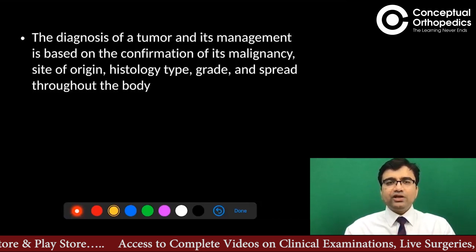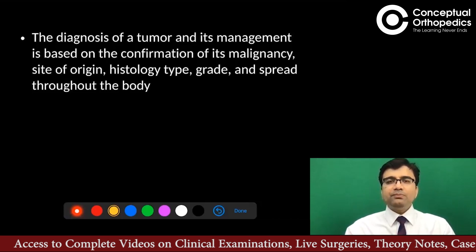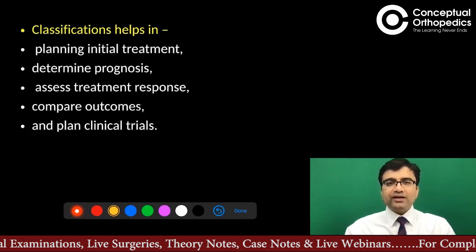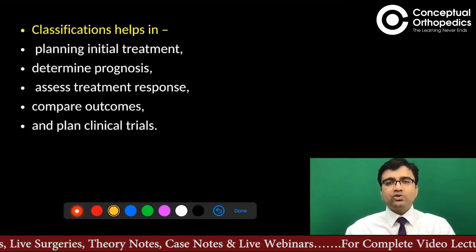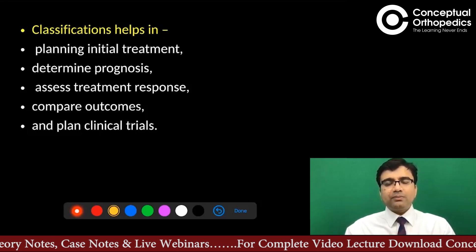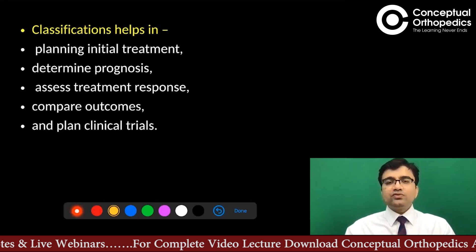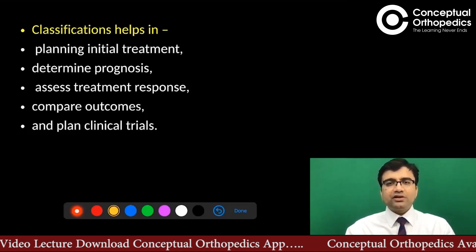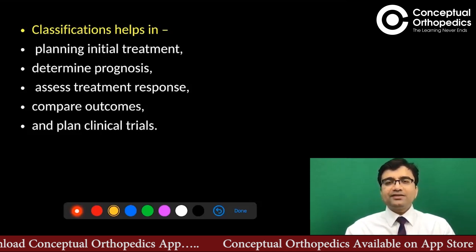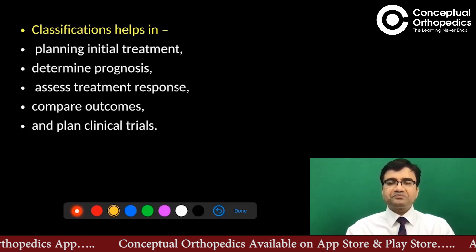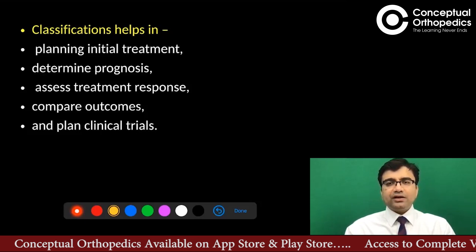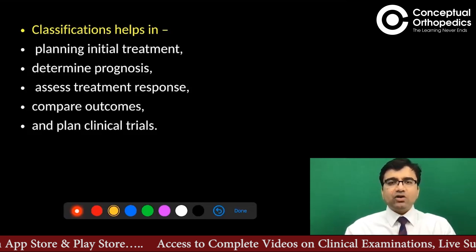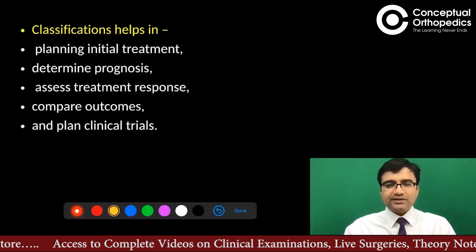A lot of things have changed, and that's why we need to classify them properly so that we can plan management. We also explain to the patient the prognosis — for a low-grade cancer, we can say it will have a good prognosis and the chances of spread to other parts of the body are less. Once treatment starts, if the tumor size is, say, eight centimeters, after giving chemotherapy, surgery, or radiation therapy, we can observe shrinkage and assess the treatment response. Classifications also help in dividing patients for clinical trials.